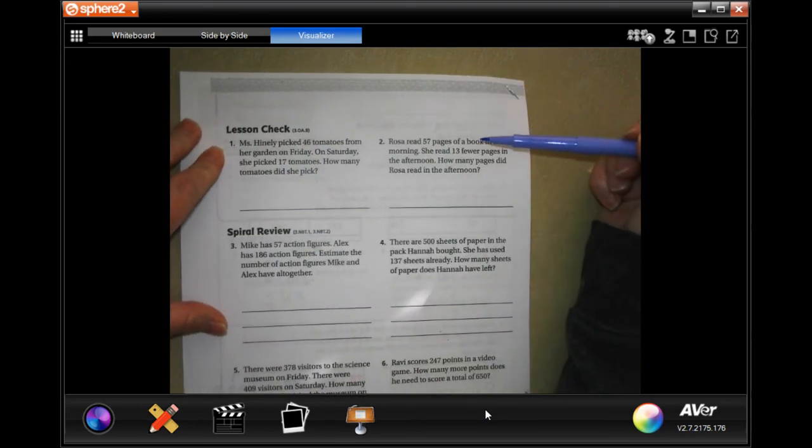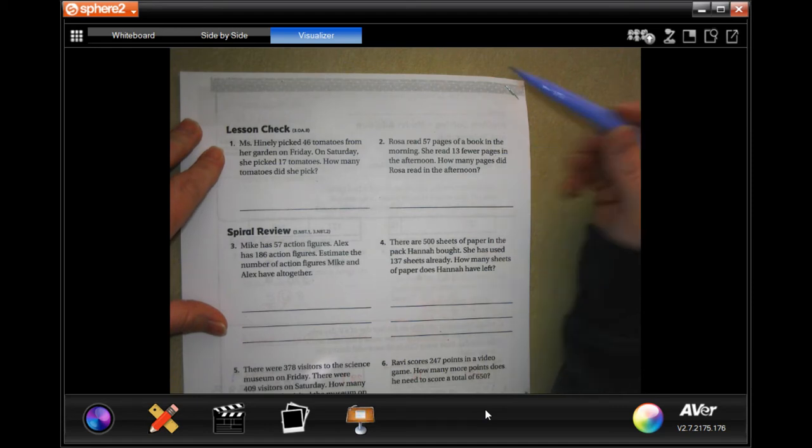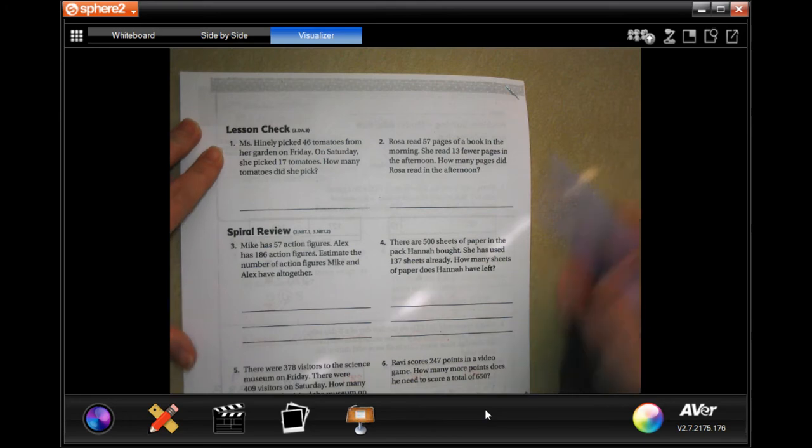Rosa read 57 pages of the book. She read 13 fewer pages in the afternoon. How many pages did she read in the afternoon? So, you're going to do 57 minus 13.